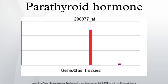Function: regulation of serum calcium. Parathyroid hormone regulates serum calcium through its effects on the following tissues. PTH was one of the first hormones to be shown to use the G-protein adenylyl cyclase second messenger system. Normal total plasma calcium level ranges from 8.5 to 10.2 mg per deciliter.